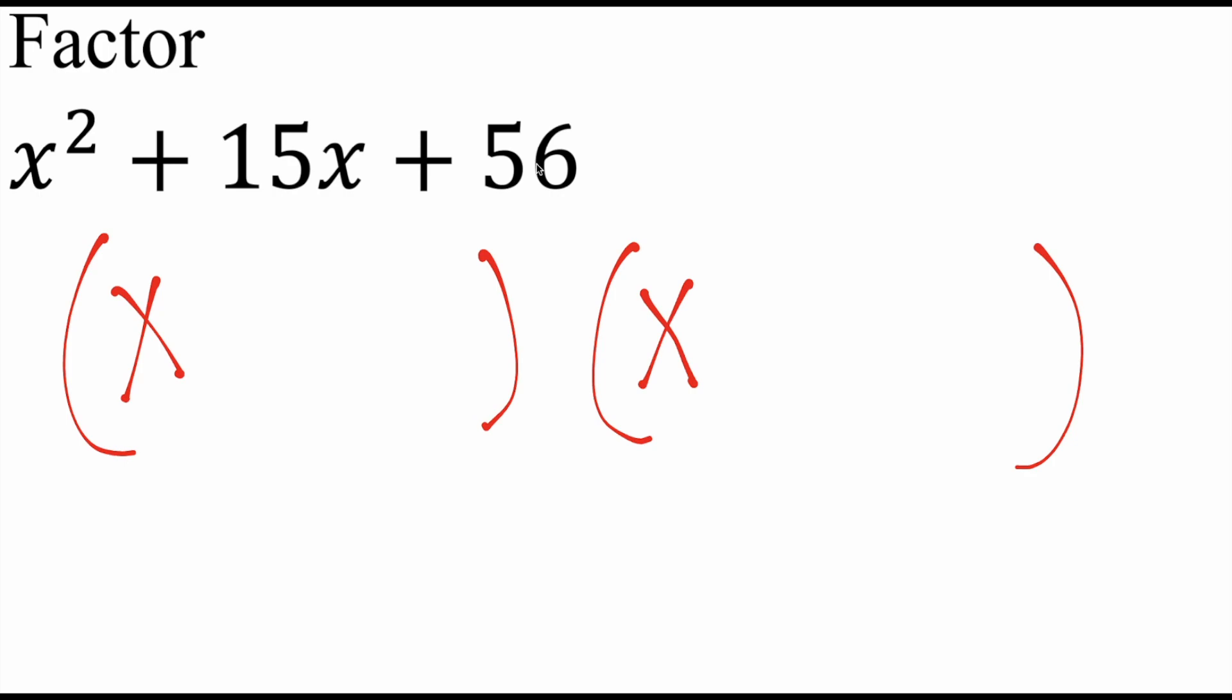So we think to ourselves, what two numbers multiply to give you 56 and add to give you 15? And we know that's going to be 8 and 7 because 8 times 7 is 56, and 8 plus 7 is 15.